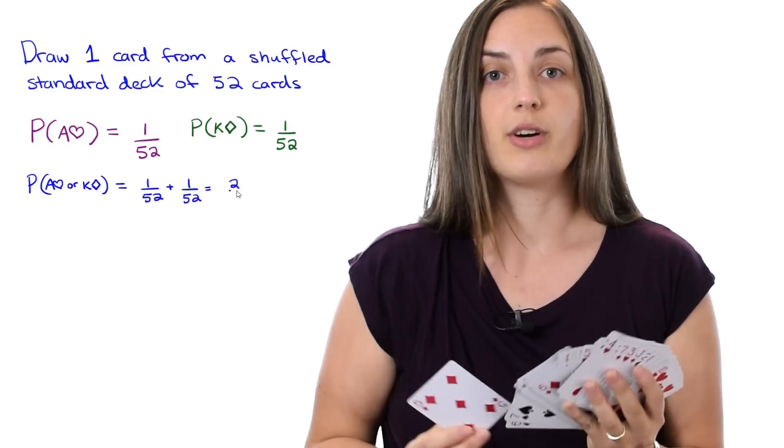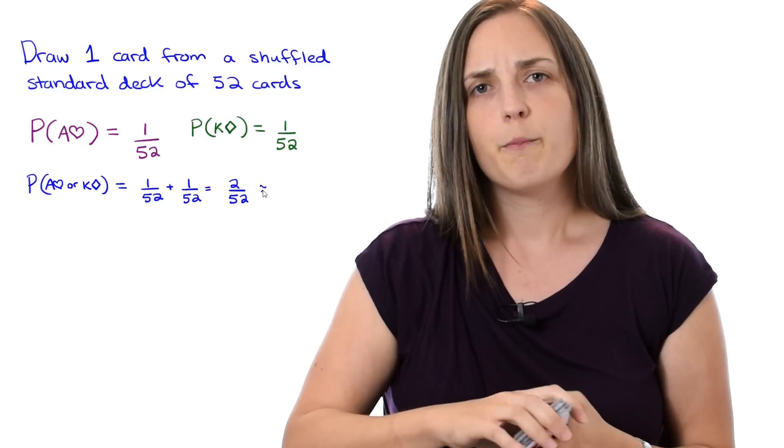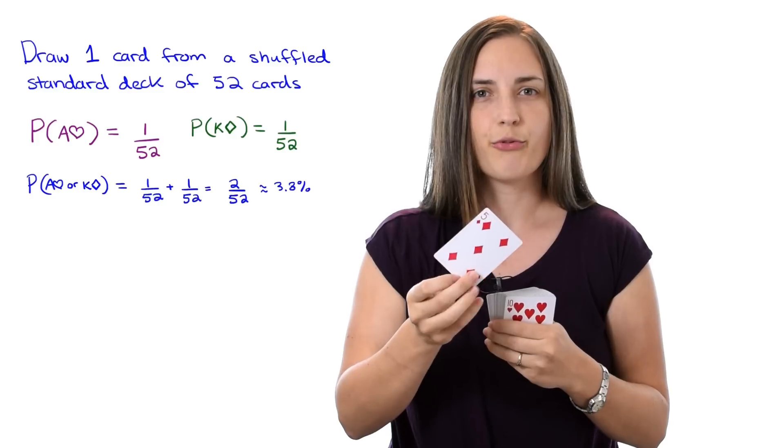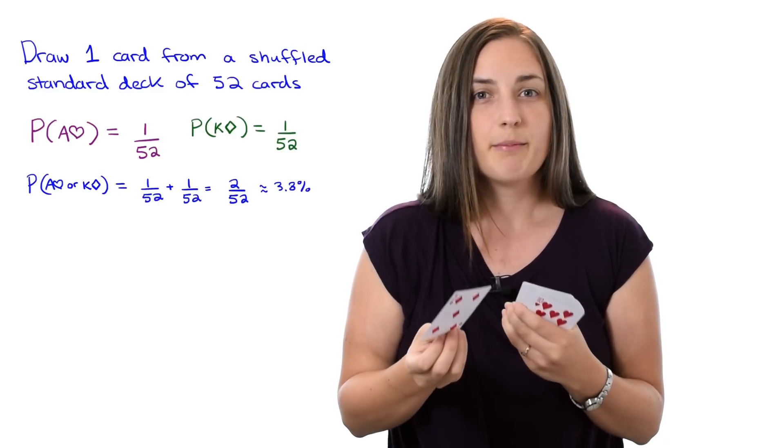It's just the sum of the two choices. Now that worked out because those two choices were mutually exclusive. It would be impossible for the card that I pick to be both the Ace of Hearts and the King of Diamonds at the same time. It's just one card.